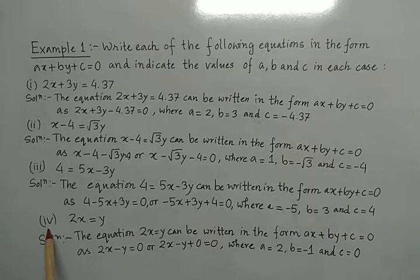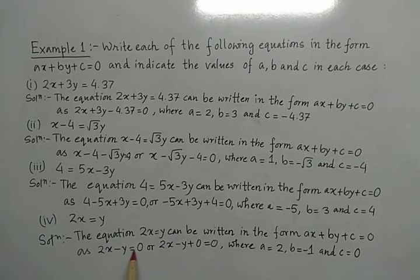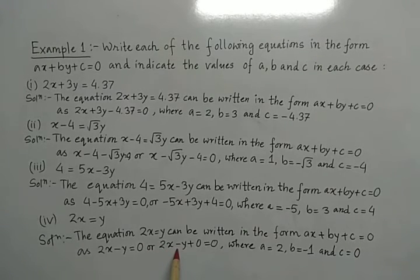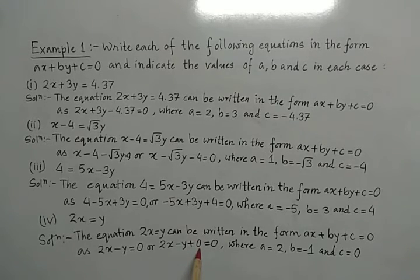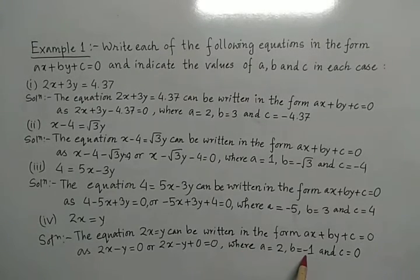In equation 4 of example 1, something is missing. We first bring the y term to the left hand side to get 2x minus y. Now the constant c term is not there. Since it is missing, we write 0 as the constant — adding or subtracting 0 doesn't affect the equation. So we write 2x minus y plus 0 equals to 0, giving a equals to 2, b equals to minus 1, and c equals to 0. I hope you have understood example 1.